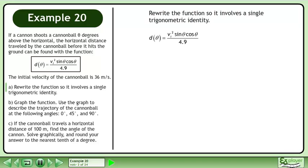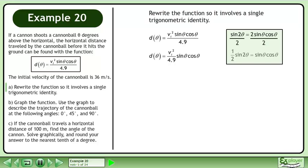Bring up the function for horizontal distance. Rewrite the function so the trigonometric portion is by itself. We know that sin 2 theta equals 2 sin theta cos theta. Divide both sides by 2 to get 1 half sin 2 theta equals sin theta cos theta. Replace sin theta cos theta with 1 half sin 2 theta.